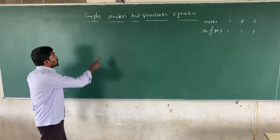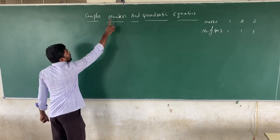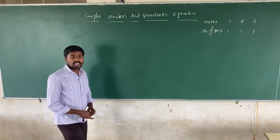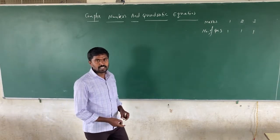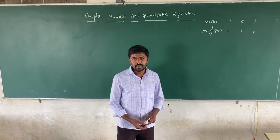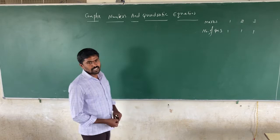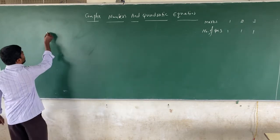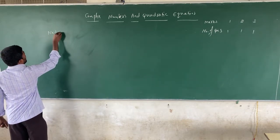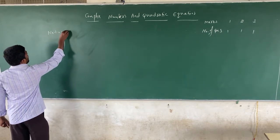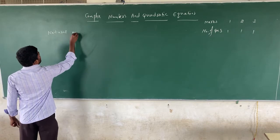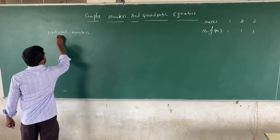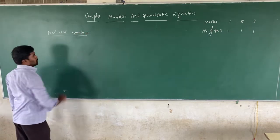Before going to talk about Complex Numbers, let me discuss about Numbers. The first type is Natural Numbers.